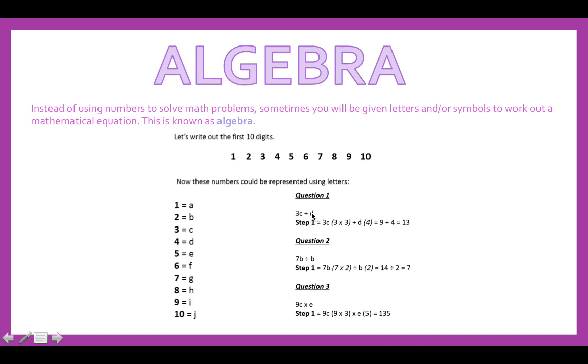So you could have a question like so: 3C plus D. Using this information here, you will need to understand what C is referring to and D and then work that out. Step 1: 3C is actually referring to 3 times C. C is 3, so 3 times 3. Remember if you have a number and a letter right next to each other, there's a times sign in between these. So you basically times 3 by C, which is 3 times 3. Then you're plusing the D, so D equals 4. We've got 3 times 3 is 9 plus the 4, which is equivalent to D, gives you 13. See how simple that is.